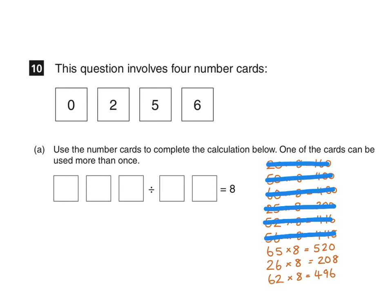65 times 8 is 520, we do have the cards to make this number. 26 times 8 is 208 and we don't have any 8s, and 62 times 8 is 496, we don't have a 4 or a 9.